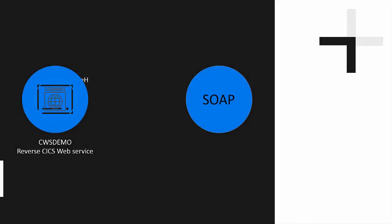The CWS Demo region is now ready to receive and process SOAP requests. However, if I were to stop the region from this current state and then restart it, the resources I've just defined and installed would not load — I would have to reinstall them after starting the region. To avoid having to manually install these resources every time I start the region, I can add their resource group to the region's startup list.